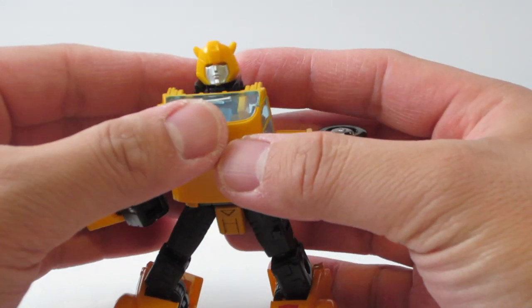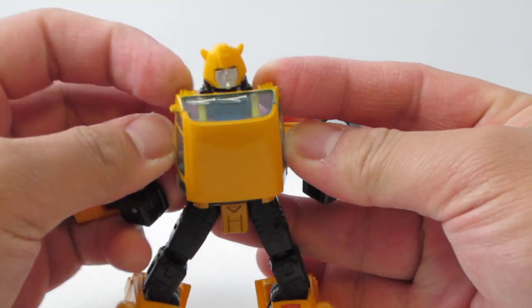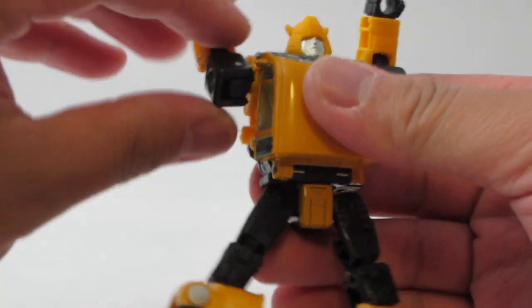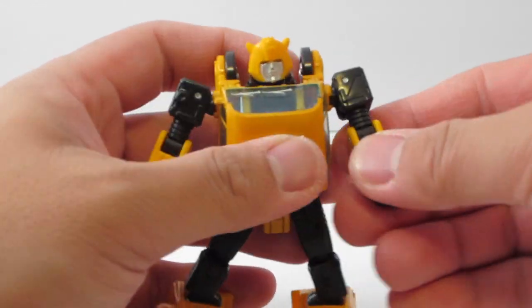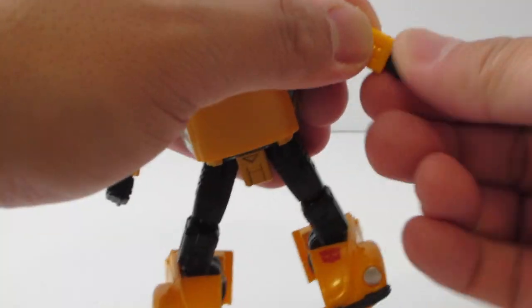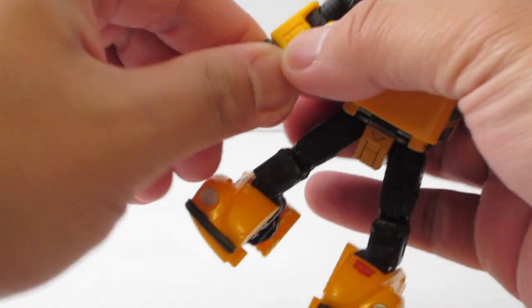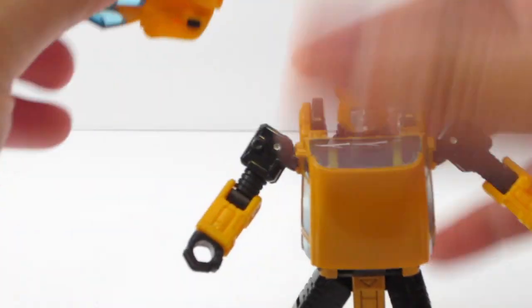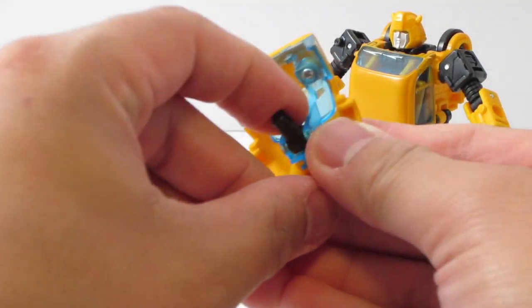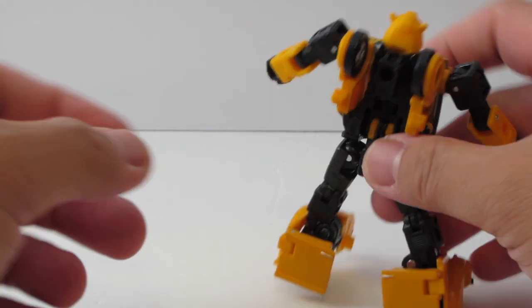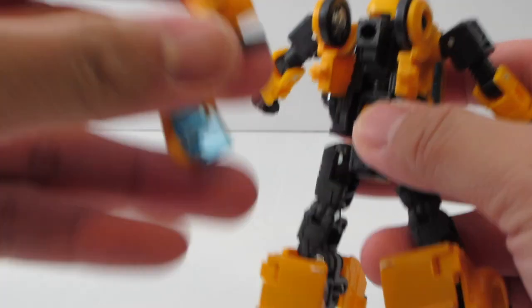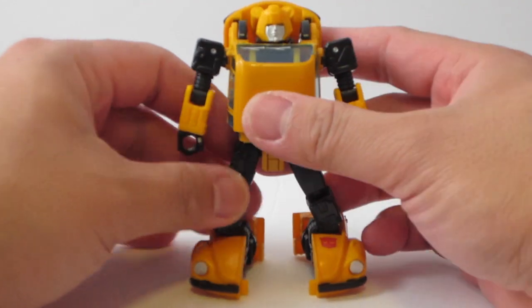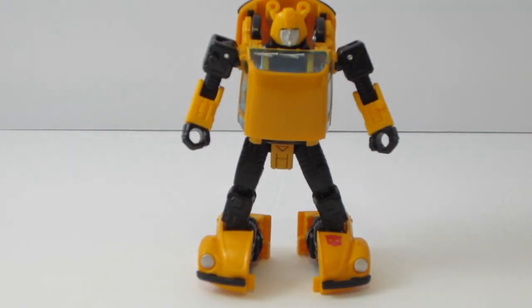Bend it down. There we go. Arms up right here. Then we can get his arms down, get his arms down here. Twist his wrist right here. And last but not least, you can get the back right here and you want to plug it into this port right here to complete the transformation. There we go. And here is Bumblebee in robot mode.